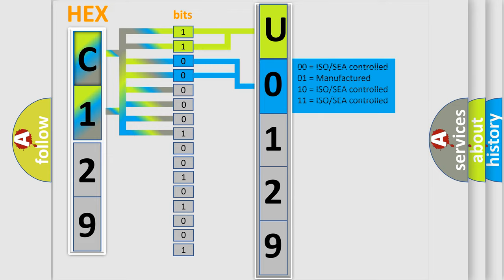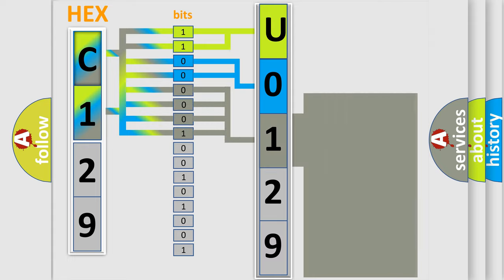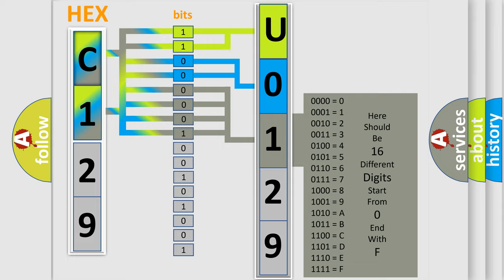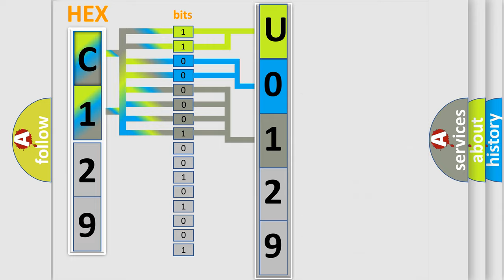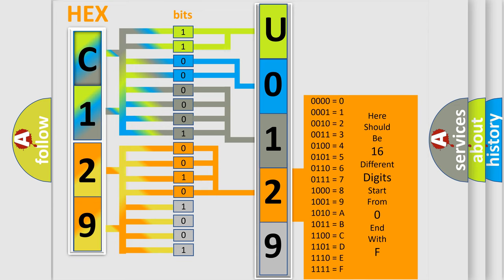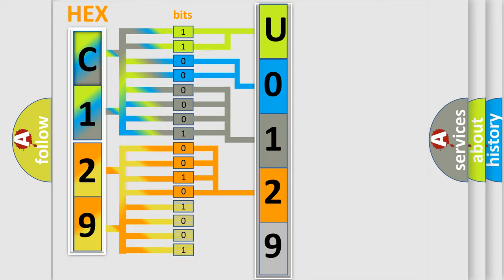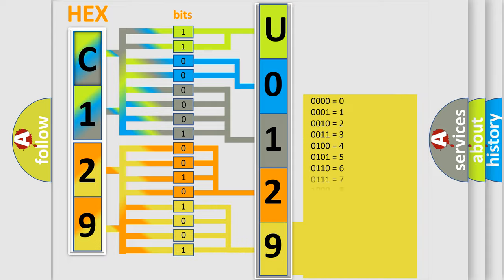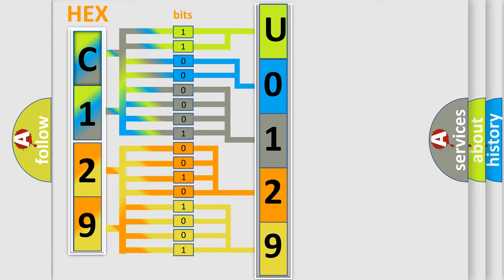The next two bits determine the second character. The last bit group of the first byte defines the third character of the code. The second byte is composed of a combination of eight bits. The first four bits determine the fourth character of the code, and the combination of the last four bits defines the fifth character. A single byte conceals 256 possible combinations. We now know in what way the diagnostic tool translates the received information into a more comprehensible format.